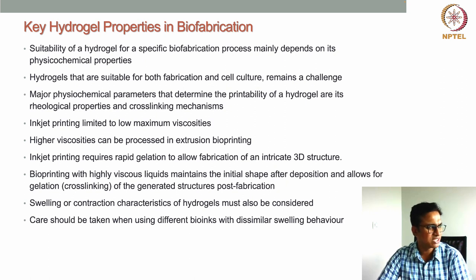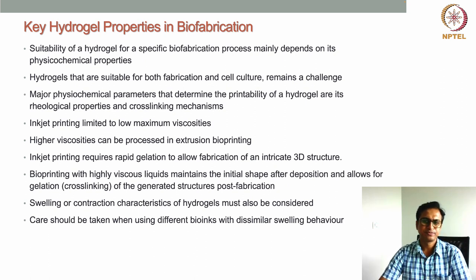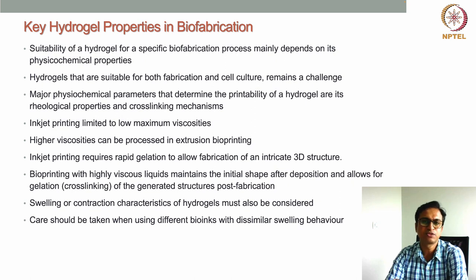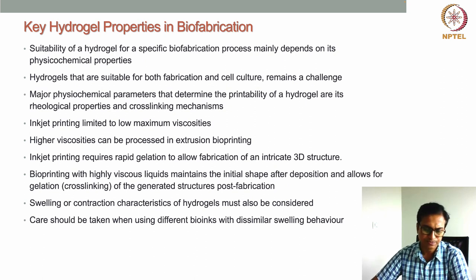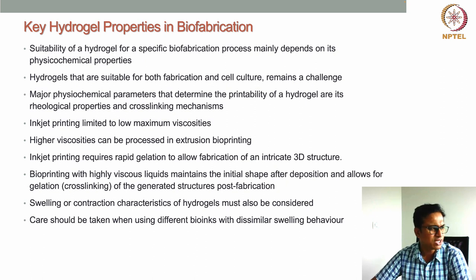When we select a tissue, we examine the physical properties of that tissue — its softness or hardness, and its different compositions. The physicochemical properties of the tissue are very important to understand when selecting a particular bioink or hydrogel. One challenge in bioink development for specific biofabrication approaches is that we must satisfy both fabrication requirements and cellular requirements. For fabrication we need certain physicochemical properties of the bioink, but for cell culture the requirements are very different, so matching both during bioprinting is a challenge.